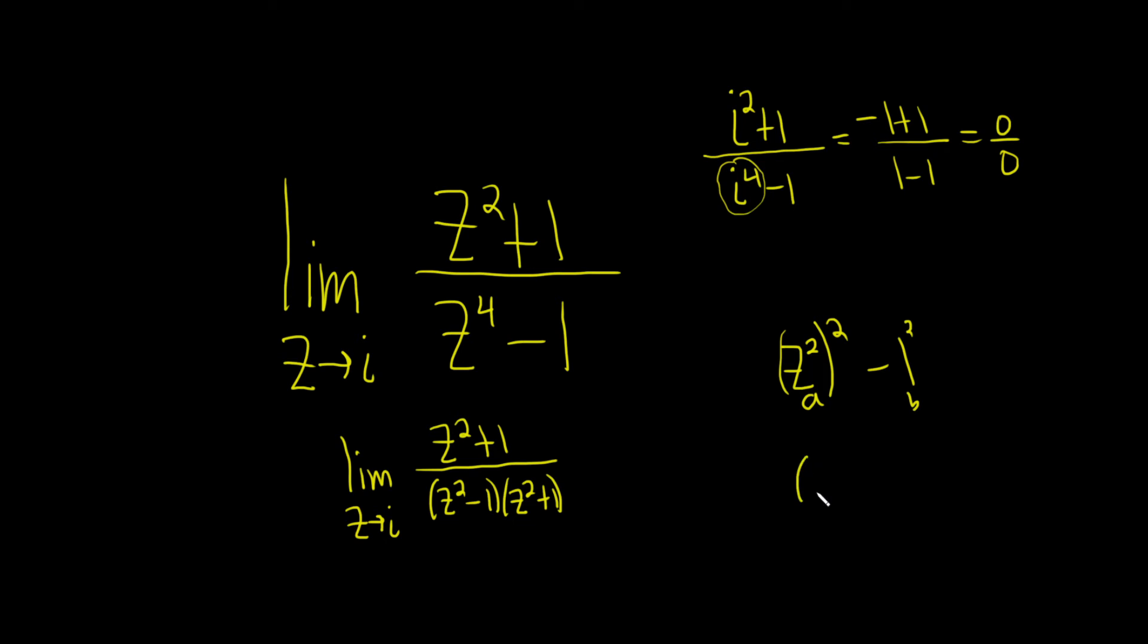Remember the formula says it's a minus b, a plus b. So in this case it's a, which is z squared, minus b, which is 1, times a, which is z squared, plus b, which is 1. So it matches the formula.